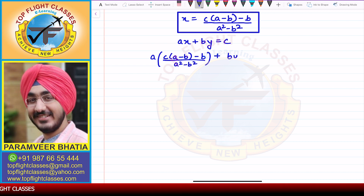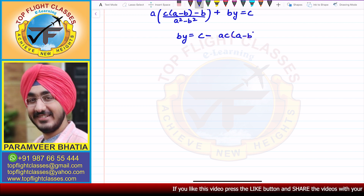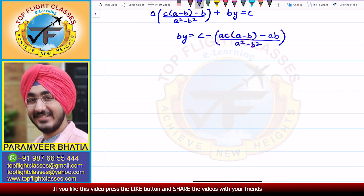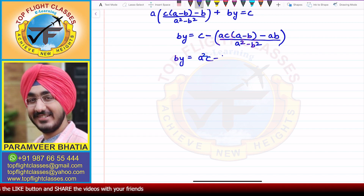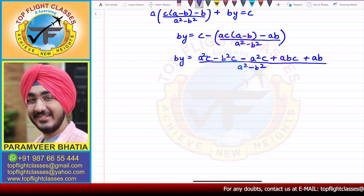Now substituting the value of x into the first equation, I get b·y equal to c minus b. Multiplying a inside I get ac into (a minus b) minus ab, divided by a-squared minus b-squared. Taking the LCM on the right-hand side, I get a-squared·c minus b-squared·c, minus a-squared·c plus abc plus ab, all divided by a-squared minus b-squared. The a-squared·c terms cancel.